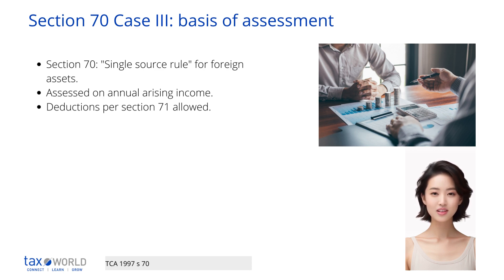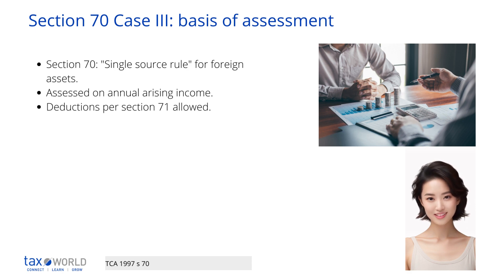Section 70 is about how income from untaxed interest and foreign property, referred to as Case 3 income, is assessed for tax purposes.